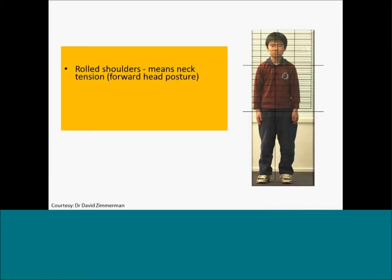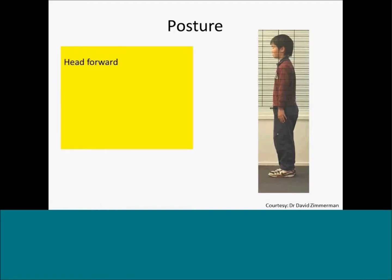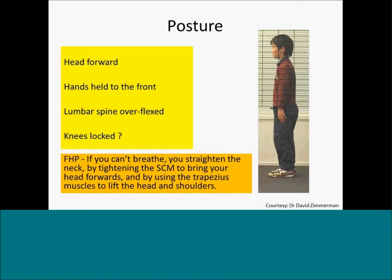Looking at the same patient from the front, we see that the shoulders are rolled forwards, probably with a forward head posture. The hands are not at the sides — they're slightly in front of the body — and some weight seems to be more on the left leg than the right. From the side view, we see the forward head posture again, with the hands at the front of the body. There may be some overflexion of the lumbar spine. The most important finding here is the FHP — forward head posture. If you can't breathe, you tend to straighten your neck, using the sternocleidomastoid muscle to bring the head forwards and the trapezius muscles to lift the head and shoulders.